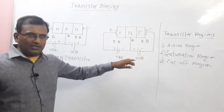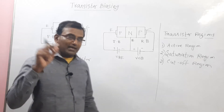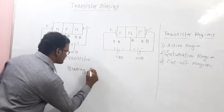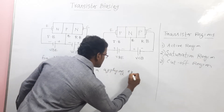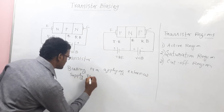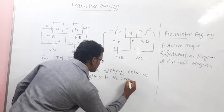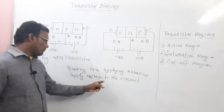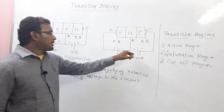We must give a supply voltage to the active devices. Then only the current will flow in the circuit. Now, what is biasing generally? Biasing is applying external supply voltage to the circuit. What kind of circuit? That is NPN transistor and PNP transistor.